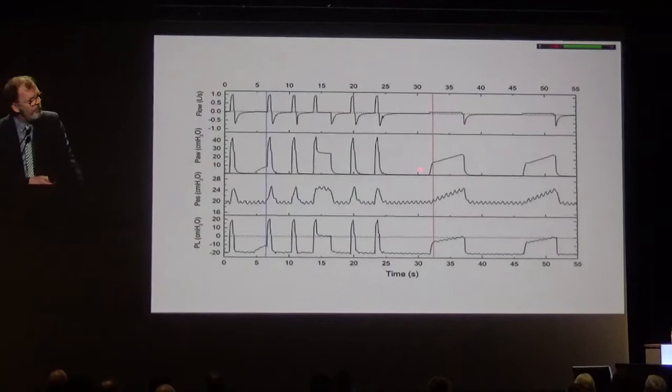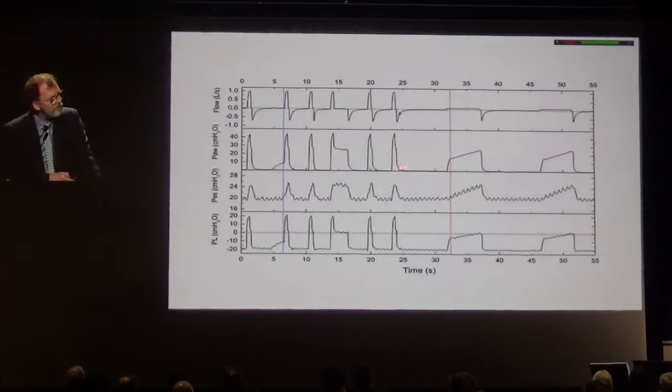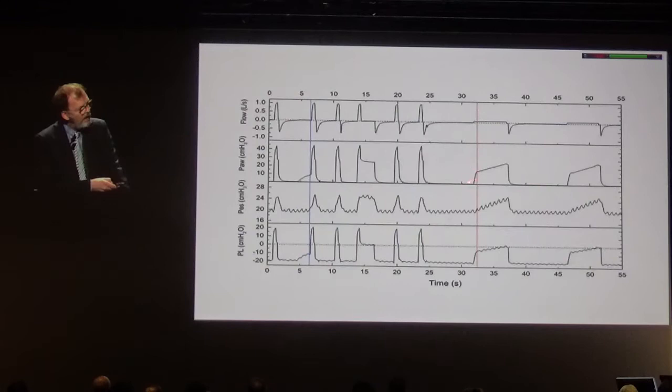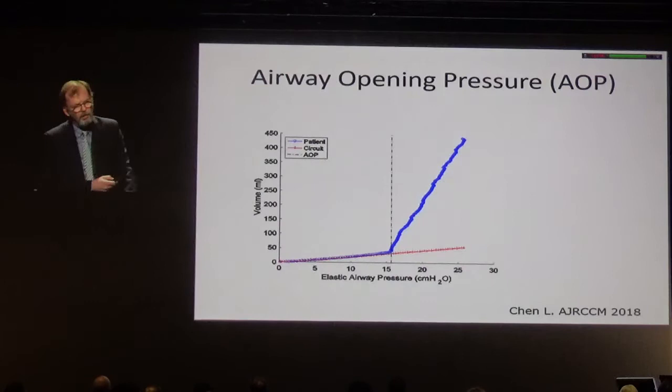What is surprising is that the first part of the low-flow inflation, obtained here after a long expiration to ensure we don't have intrinsic PEEP in the circuit, is characterized by an initial abrupt increase in pressure. When you plot the PV curve, what you see is this,